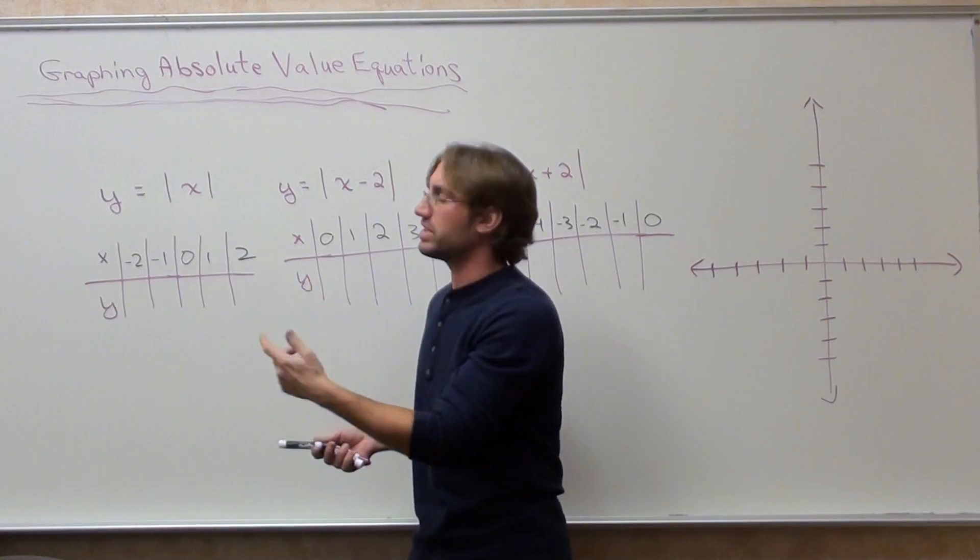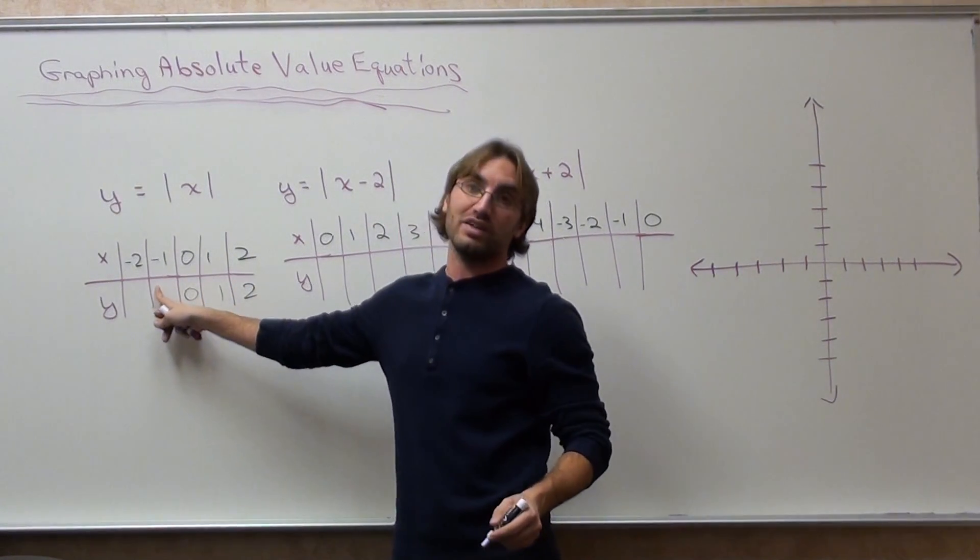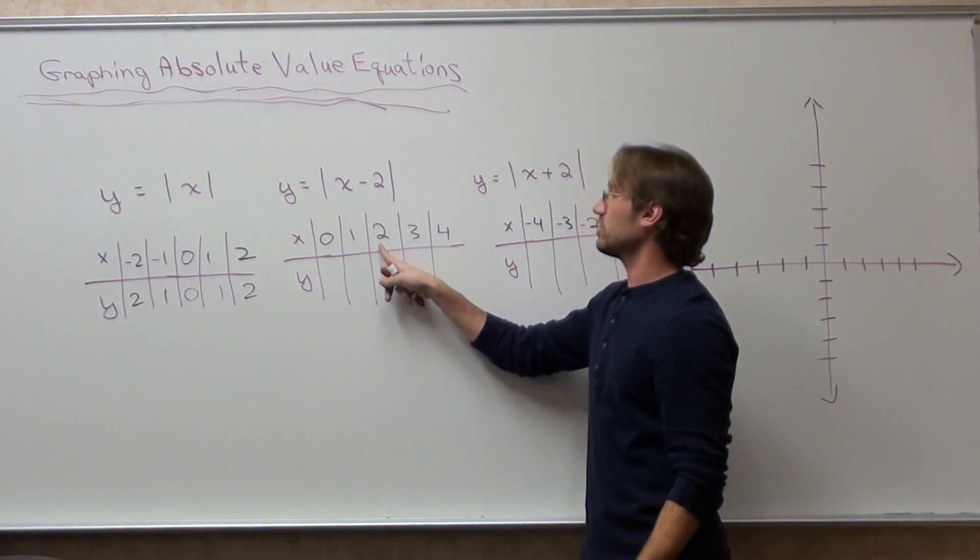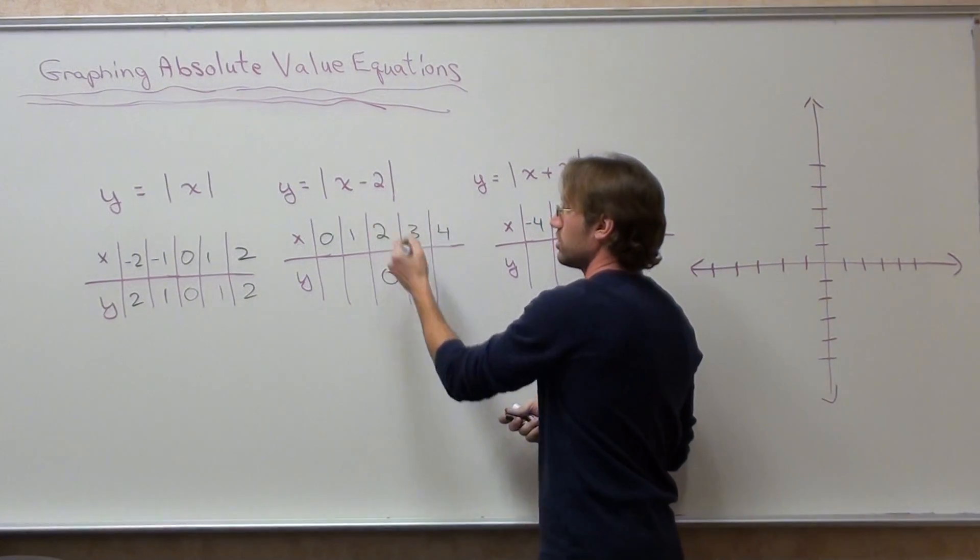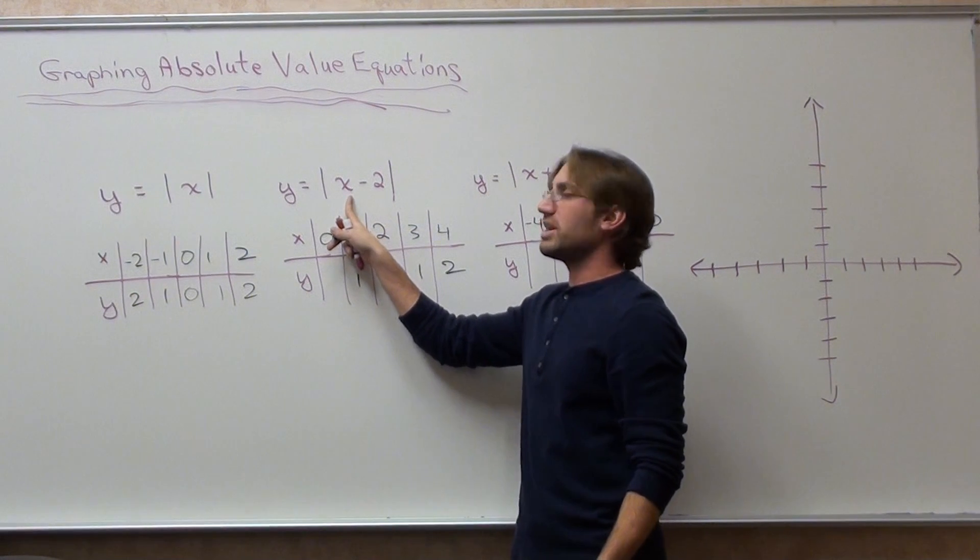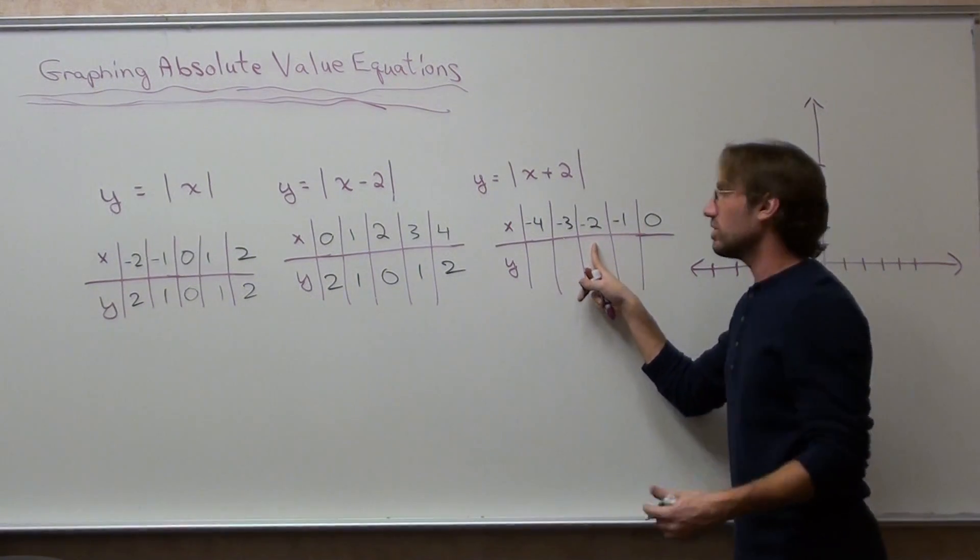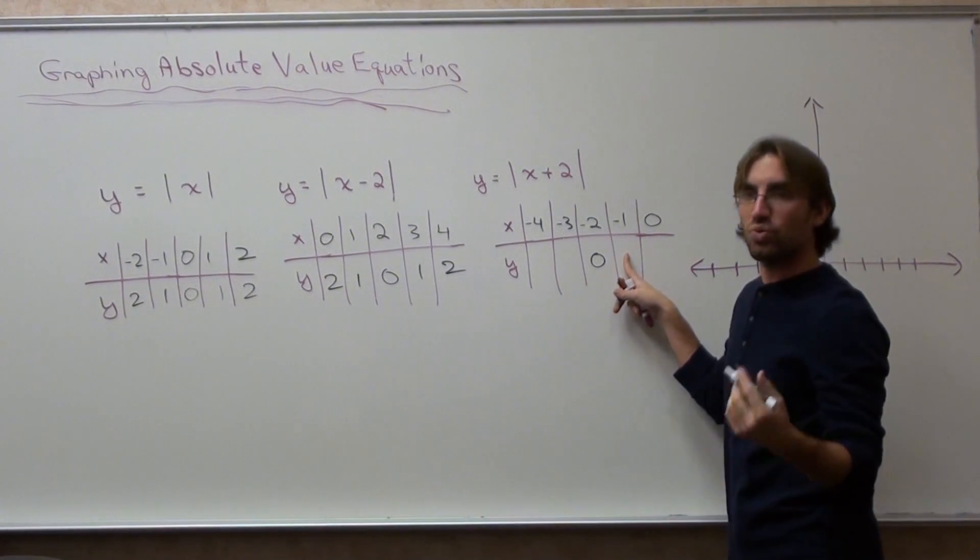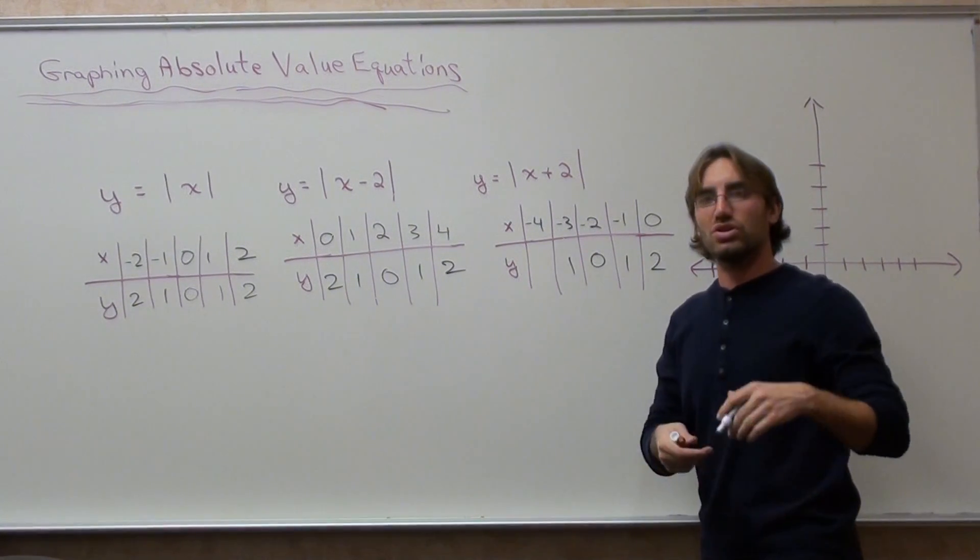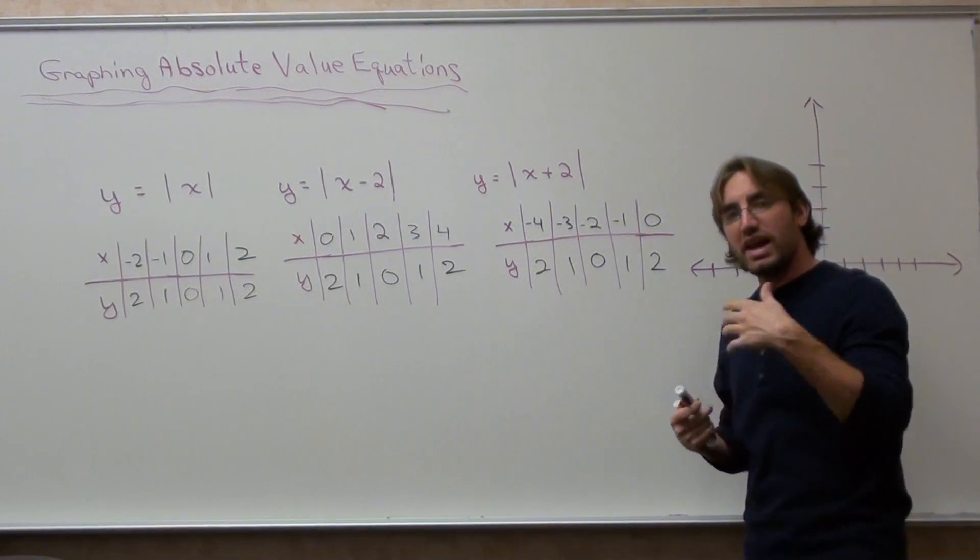If I plug in 0, the absolute value of 0 is 0. Absolute value of 1 is 1, absolute value of 2 is 2. Absolute value of negative 1 is 1, absolute value of negative 2 is 2. For the second one, 2 minus 2 is 0, 3 minus 2 is 1, 4 minus 2 is 2. 1 minus 2 is negative 1, but absolute value is 1. 0 minus 2 is negative 2, absolute value is 2. For the third, negative 2 plus 2 is 0, negative 1 plus 2 is 1, 0 plus 2 is 2, negative 3 plus 2 is negative 1, absolute value is 1. Negative 4 plus 2 is negative 2, absolute value is 2. I just made a table and figured out how to graph them.